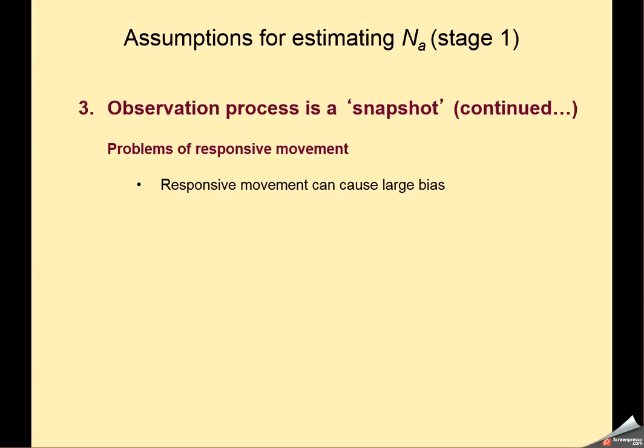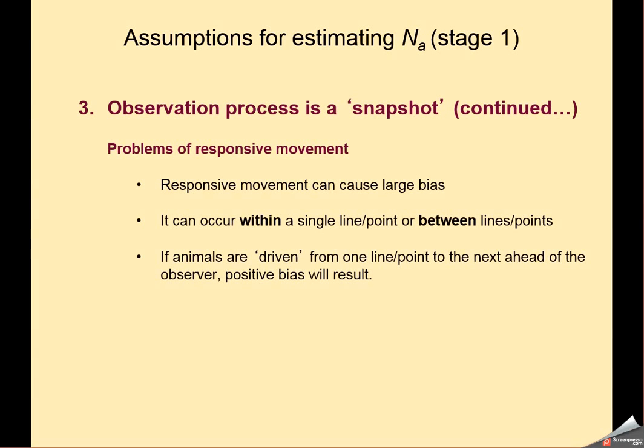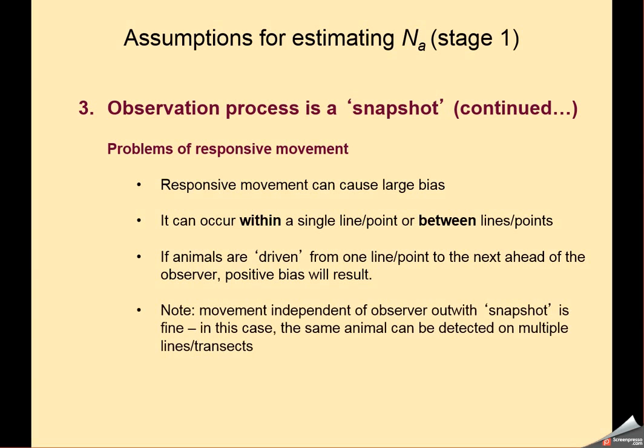Now, if animals are moving as a result of being disturbed by the observers, then the consequences that I mentioned previously can be exacerbated. You can have movement of animals along a transect or moving from one transect to another. Obviously, if you drive animals so that you repeatedly see them on successive points or lines, you'll have even greater positive bias than before.